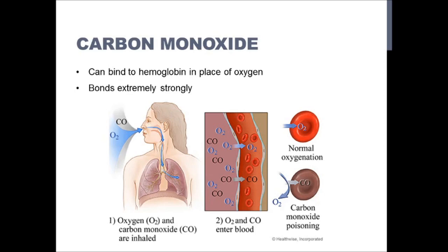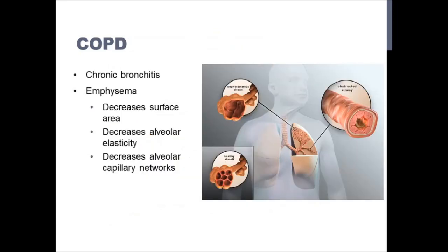COPD is a blanket term meaning chronic obstructive pulmonary disorders. The two types are chronic bronchitis and emphysema. Chronic bronchitis is an abnormal constriction of the bronchi and bronchioles, usually due to a long history of smoking or exposure to environmental pollutants. With emphysema, you have a decreased surface area, decreased alveolar elasticity making it hard to keep alveoli open, and a decrease in alveolar capillary networks, making it more difficult for the lungs to perform gas exchange.